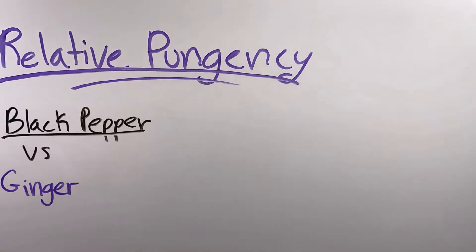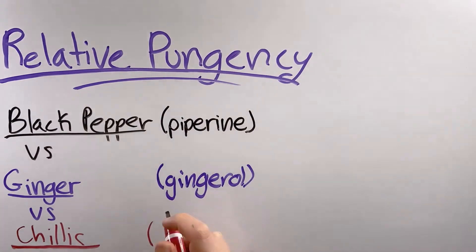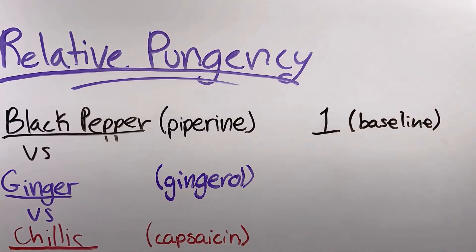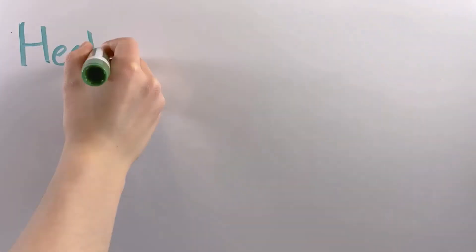When compared to other foods, black pepper is a 1 on the pungency scale. It has a similar spice intensity to ginger, which scores 0.8, but it is nowhere near as spicy as chilies, which score between 150 and 300.